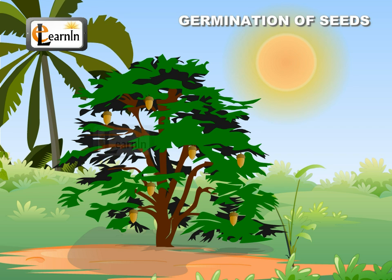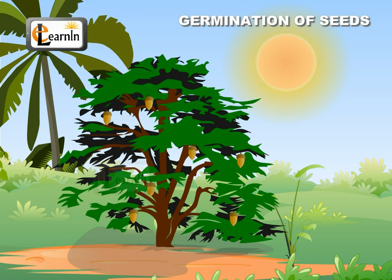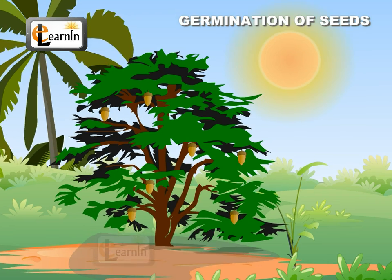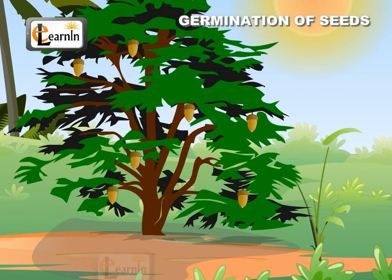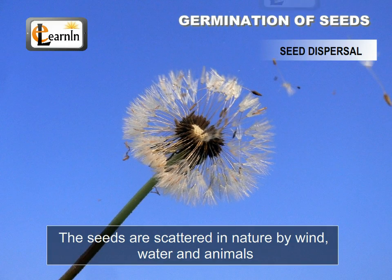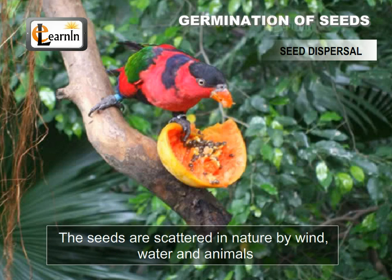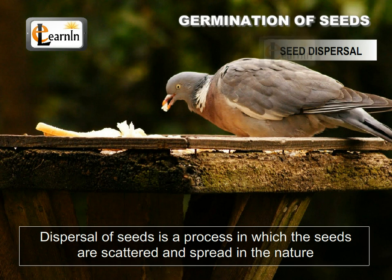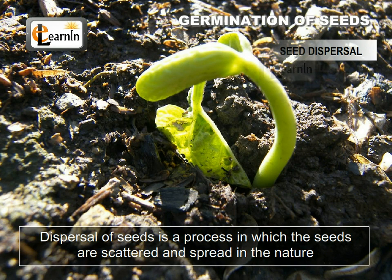Seed dispersal. We know that seeds germinate into plants. What if all the seeds of the plant are sown below the parent plant? The new plants would not survive because the place would be too crowded and they would not get enough sunlight as well. To avoid this, the seeds are scattered in nature by wind, water and animals. Dispersal of seeds is a process in which the seeds are scattered and spread in nature.